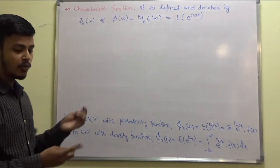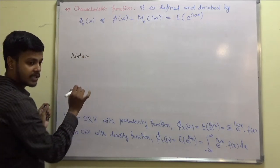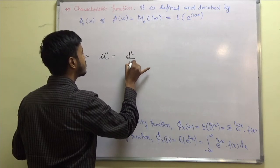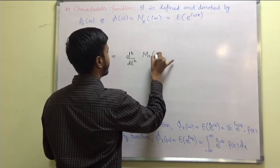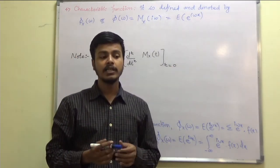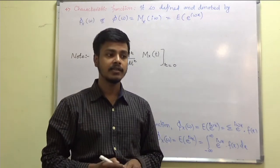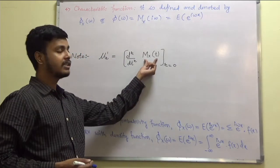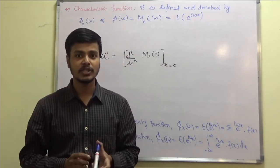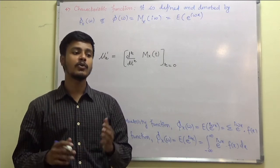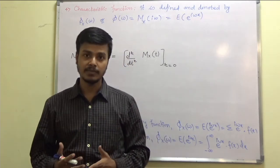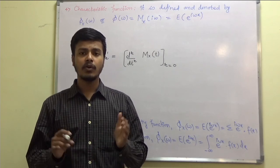An important note: mu_r_dash equals the rth order derivative with respect to t of M_x(t), evaluated at t equals 0. So when you need to find moments about the origin and nothing else is given, you can find the moment generating function and take its derivatives for r equals 1, 2, 3, 4. Go through these definitions thoroughly because problems are based on them — and once the definitions are clear, the problems only require calculus: solving integrations or sums.